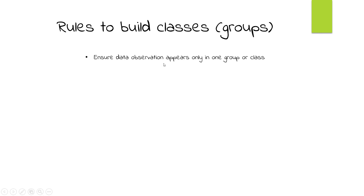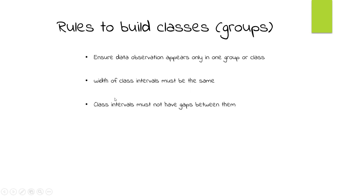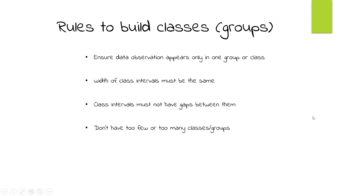Some rules for building classes: ensure each data observation appears in only one group. The width of class intervals must be the same. Class intervals must not have gaps between them. Don't have too few or too many classes — just enough to cover the data. In statistics there are no hard and fast rules when rounding class widths or groupings; round up or down as needed to manage the data. We hope this session was useful. In the next session we'll discuss frequency distributions for continuous variables. Please subscribe and click the bell button for notifications. Thanks for watching.